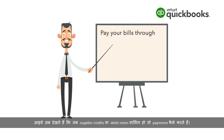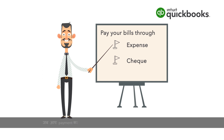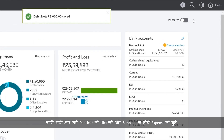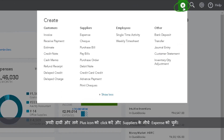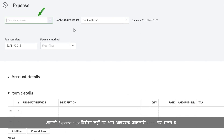Let us now see how to make payments where there are supplier credits or debit notes. You can record this transaction either as an expense or a check. When you use a check to make the payment, the transaction adds to the list of checks that can be printed. Let us record the payment as an expense. Click the plus icon at the top right and select Expense under Suppliers. You will see the Expense page where you can enter the information needed.